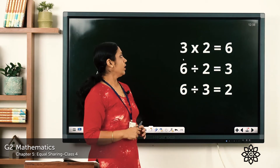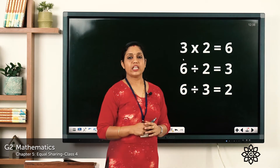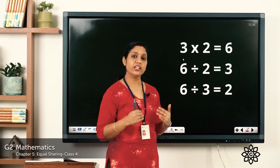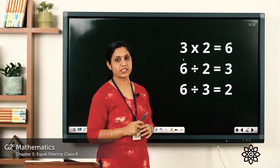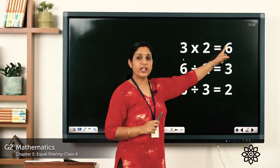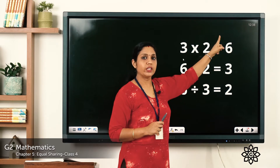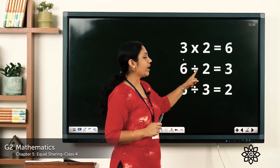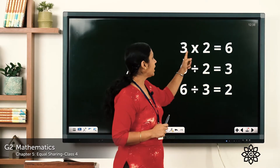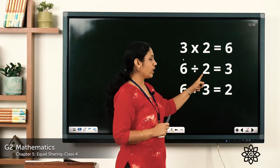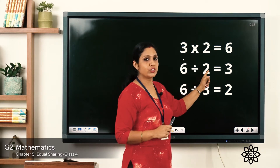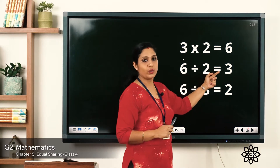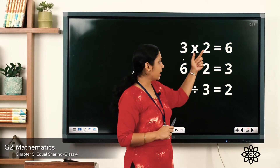Let's see more examples. Here we have 3 into 2 is equal to 6 — we've learned 3 twos are 6. In division form, the answer is 6. If we divide 6 by any of these numbers we get the other number. So 6 divided by 2: say the table of 2 — 2 ones are 2, 2 twos are 4, 2 threes are 6 — so 6 divided by 2 is equal to 3.